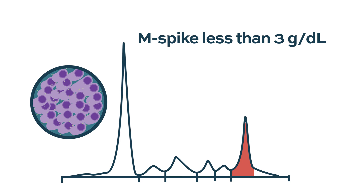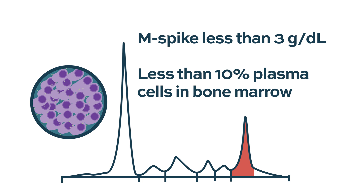Monoclonal gammopathy of renal significance is a relatively new term used in patients who have MGUS — monoclonal gammopathy of undetermined significance. We start with an M-spike or myeloma protein of less than 3 grams per deciliter and less than 10% plasma cells in the bone marrow, but patients with renal significance do have a kidney problem related to this abnormal protein.